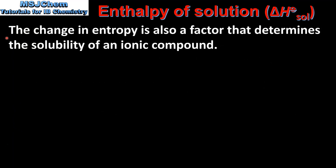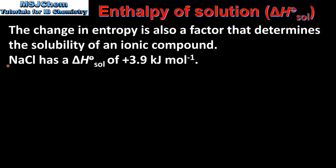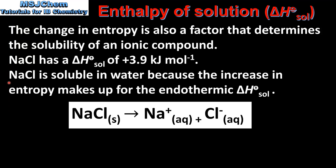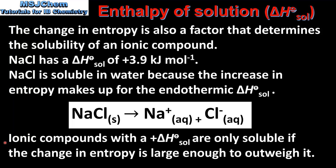The change in entropy is also a factor that determines the solubility of an ionic compound. For example, sodium chloride has an enthalpy change of solution of 3.9 kJ/mol. Sodium chloride is soluble in water because the increase in entropy makes up for the endothermic value of the enthalpy change of solution. When one mole of solid ionic compound dissolves to form 2 moles of aqueous ions, this is an increase in entropy because aqueous ions have a higher entropy than solids. To summarize, ionic compounds with a positive value for the enthalpy change of solution are only soluble if the change in entropy is large enough to outweigh it.